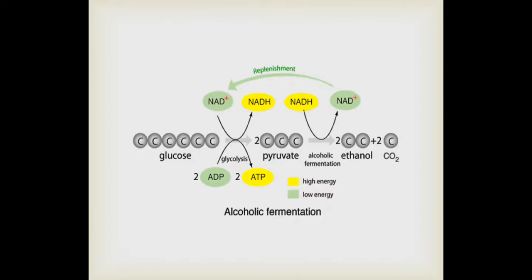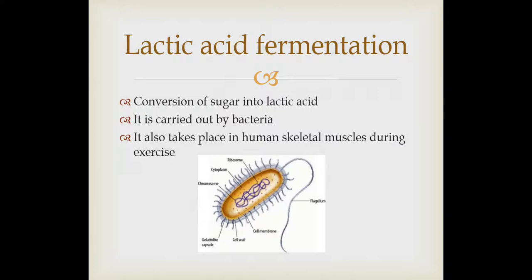In the second step — reduction — the pyruvic acid molecule is reduced, resulting in ethanol (a two-carbon compound) and carbon dioxide. Two carbon dioxide molecules are formed in this reaction. This reduction is carried out by NADH, which provides hydrogen to form ethanol, and as a result NADH is converted back into NAD+.